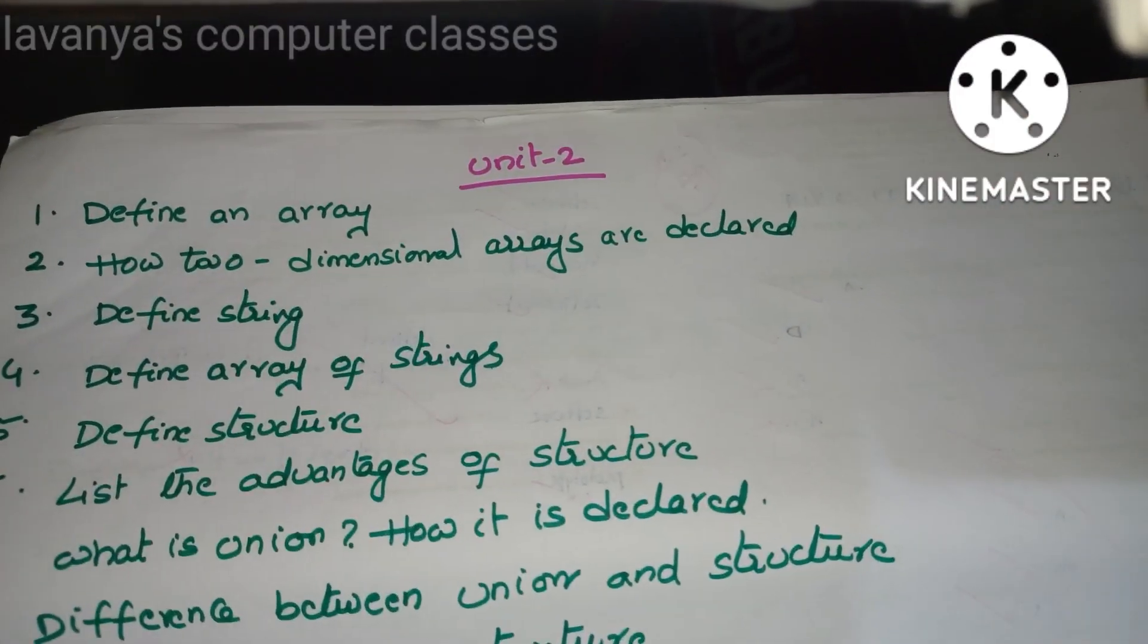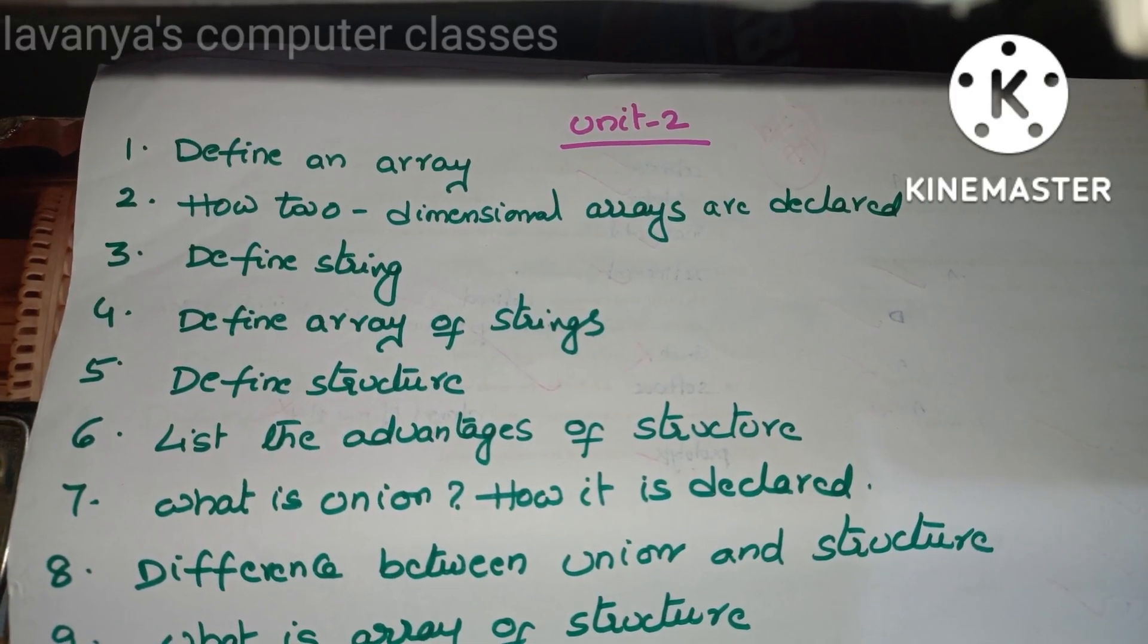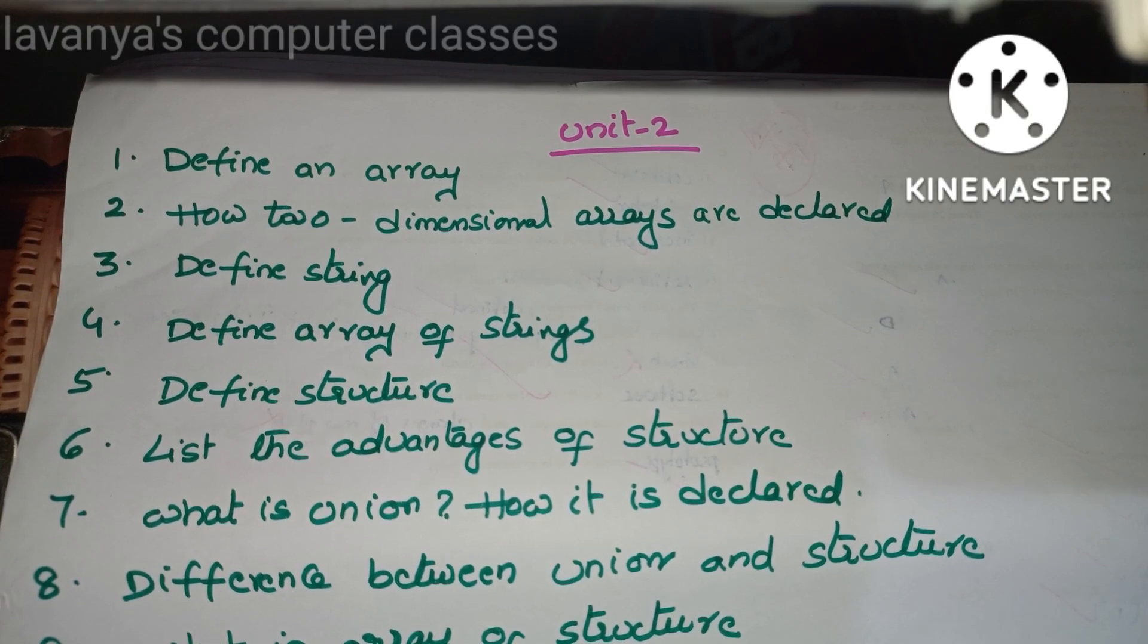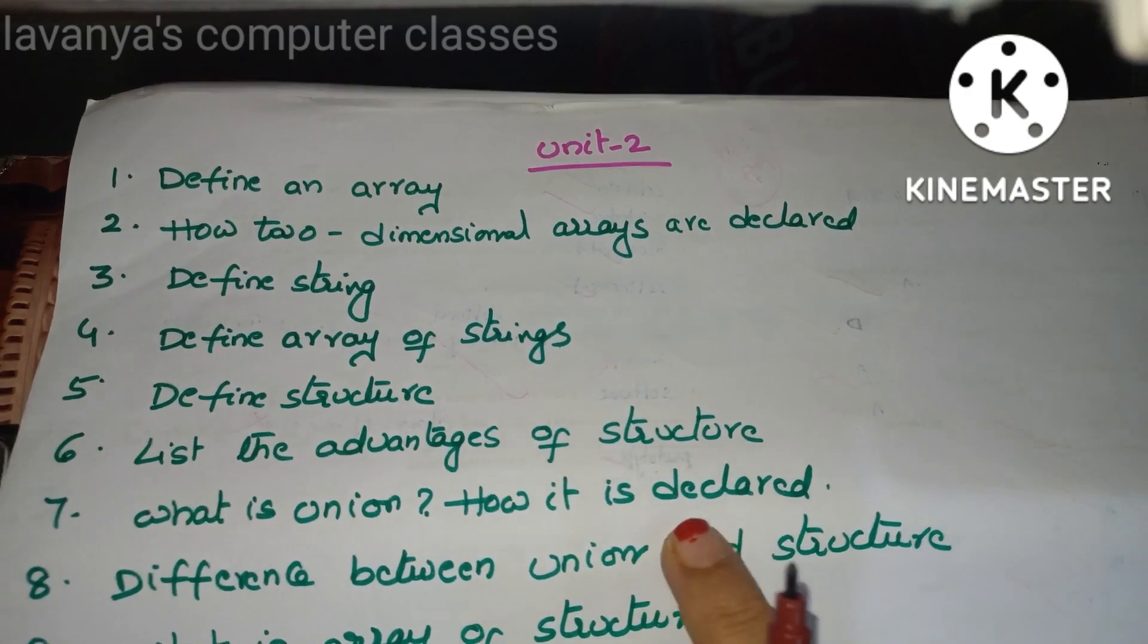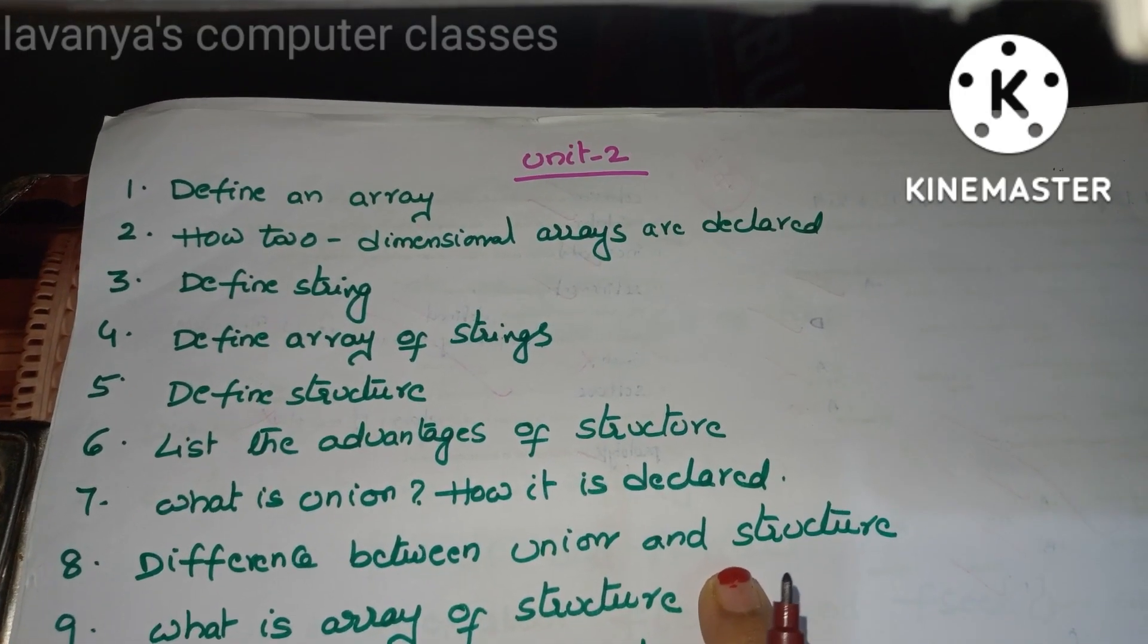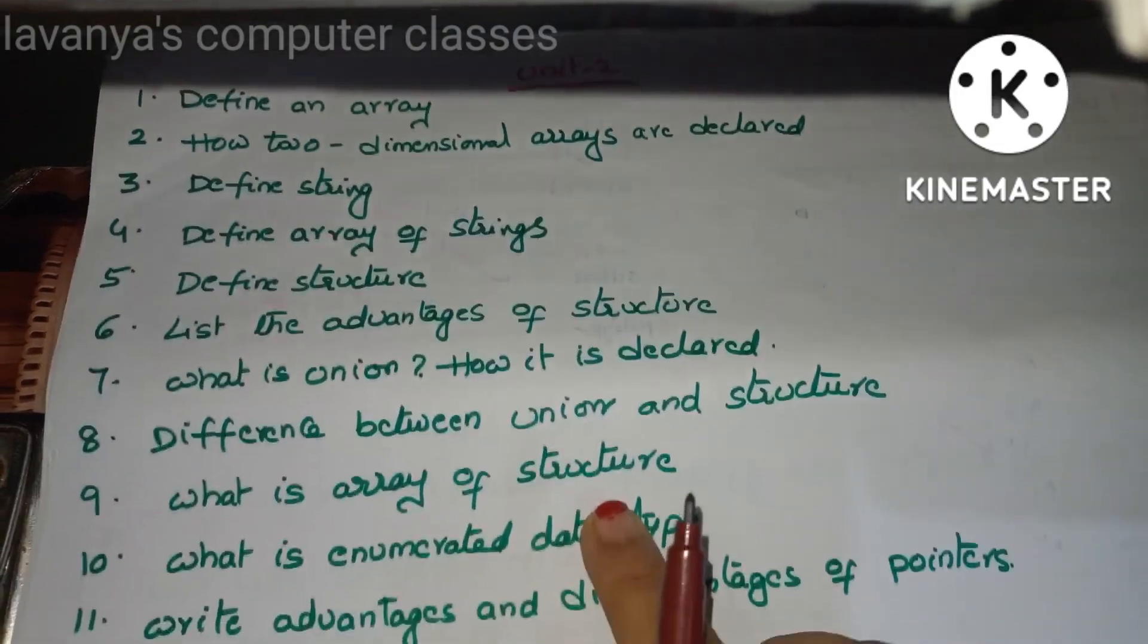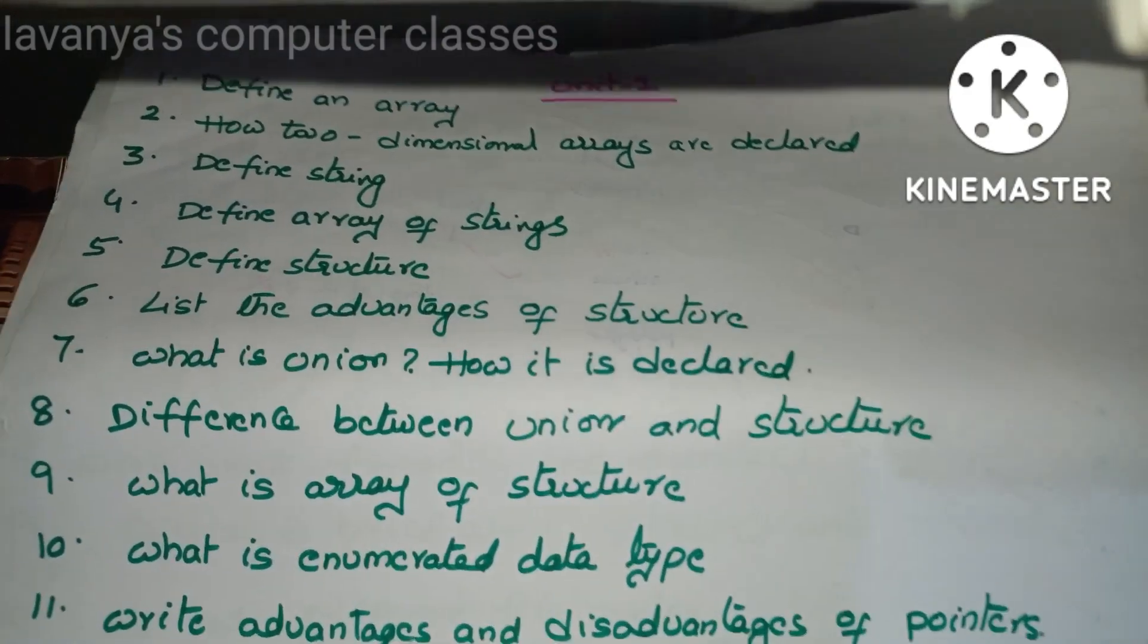Only Unit 1 is the lengthy one. Next, Unit 2. The important questions are: define an array, how to declare two-dimensional arrays and single-dimensional array also. Define string or what is string? Define array of strings, define structure, list the advantages of structures, what is union, how it is declared? Difference between union and structure. This is very important question for essay type also, but depends upon the marks. You have to think and write how much you have to write for the short answer.